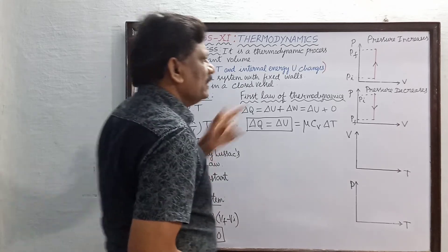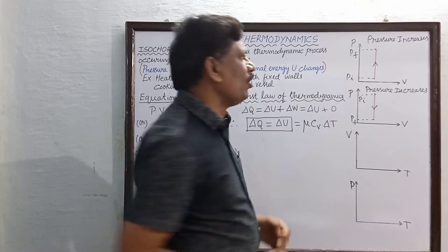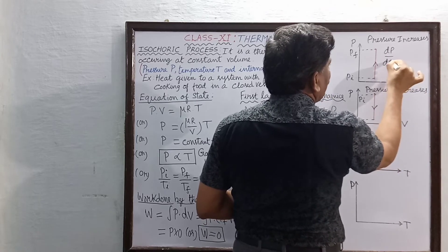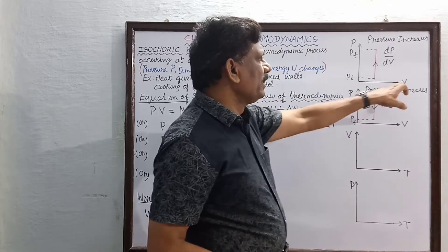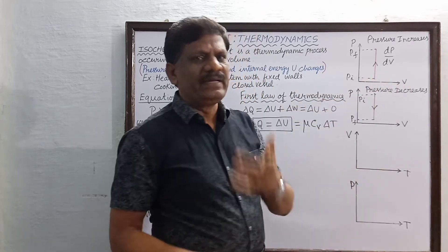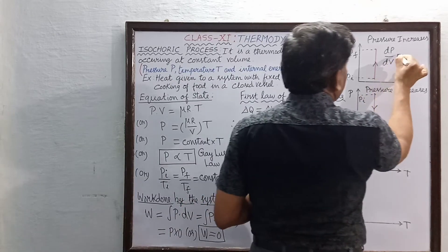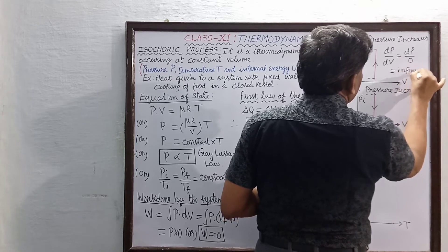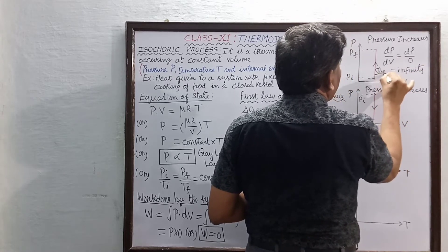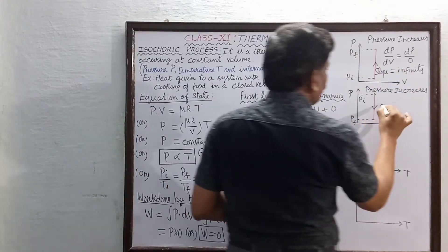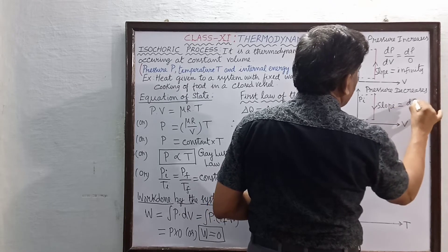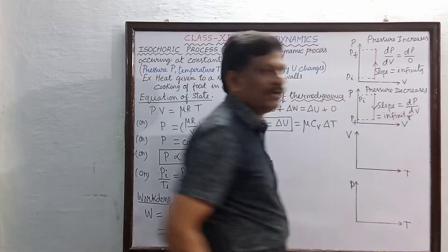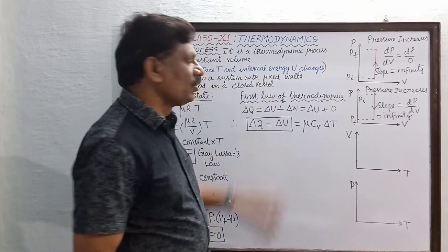In the PV diagram, the slope is defined as the change in the y-axis divided by the change in the x-axis, which is dP/dV. Since there is no change in volume, dV = 0, so the slope = dP/0 = infinity. Therefore, the slope of the isochoric process on a PV diagram is infinity in both cases.